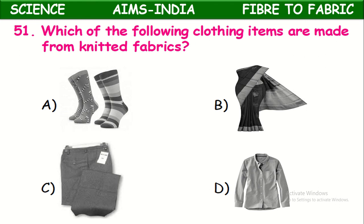Which of the following clothing items are made from knitted fabric? Knitted fabrics are made with only a single yarn. Generally socks are an example — if you pull a yarn from them, it can be completely removed. These are knitted fabrics.